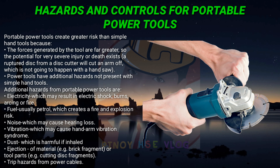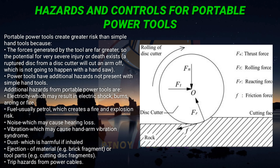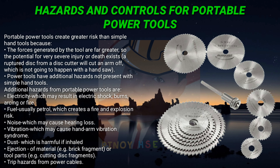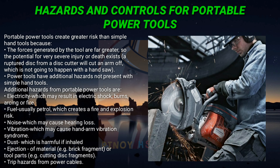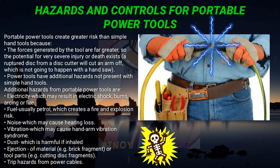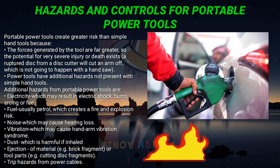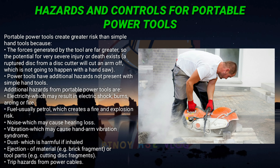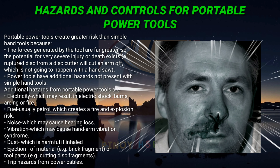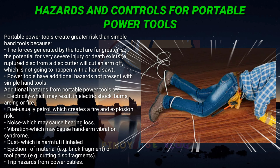Portable power tools create greater risk than simple hand tools because the forces generated are far greater, so the potential for very severe injury or death exists – for example, a ruptured disc from a disc cutter will cut an arm off, which is not going to happen with a hand saw. Additional hazards from portable power tools include: electricity, which may result in electric shock, burns, arcing, or fire; fuel, usually petrol, which creates a fire and explosion risk; noise, which may cause hearing loss; vibration, which may cause hand-arm vibration syndrome; dust, which is harmful if inhaled; ejection of material such as brick fragments or cutting disc fragments; and trip hazards from power cables.